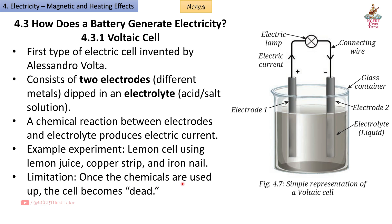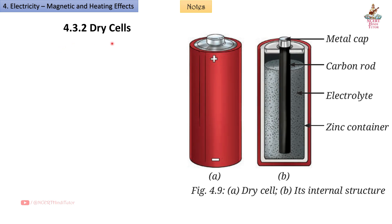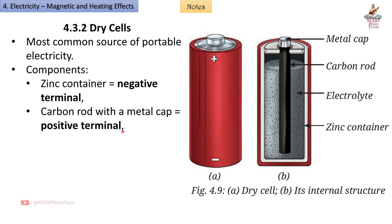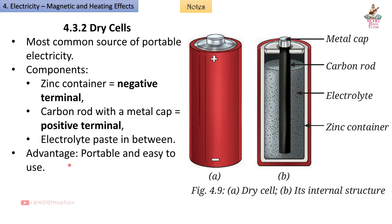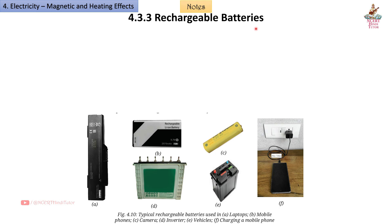Limitation of the voltaic cell: once the chemicals are used up, the cell becomes dead. 4.3.2 Dry Cells: The most common source of portable electricity. Components: a zinc container (negative terminal), a carbon rod with a metal cap (positive terminal), and an electrolyte paste in between. Advantage: portable and easy to use. Limitation: single-use, non-rechargeable.